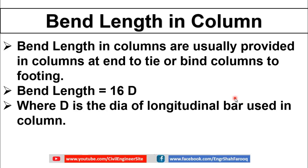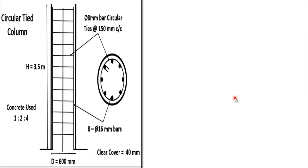Now we will discuss a practical problem of calculating bend length for a given column. Here you can see the structural drawings of the column. The longitudinal bars are provided as eight bars with 16 millimeter diameter, and the transverse reinforcement or ties are provided as 8 millimeter circular ties at 150 millimeters center-to-center spacing.